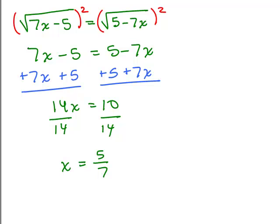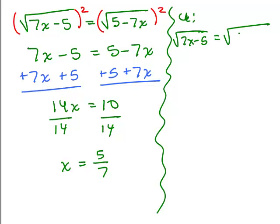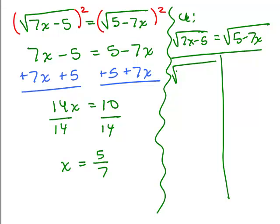And then, of course, we want to check it in the original. So we're going to put in 5 sevenths for x, so 7 times 5 sevenths minus 5. So on the left side, the sevens cancel underneath here, and I end up with 5 minus 5, which is 0. So you get the square root of 0, which is 0.